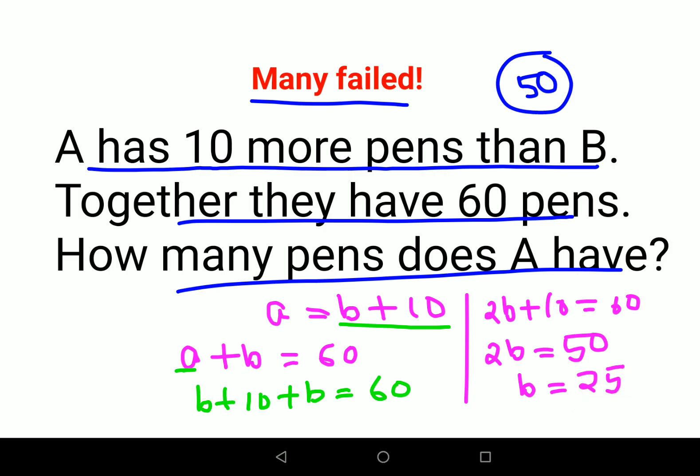So now if B equals to 25, then I can definitely say therefore A has 35 pens.